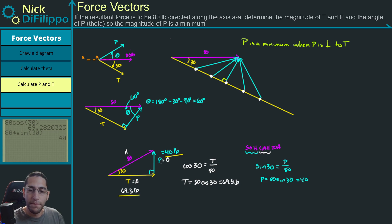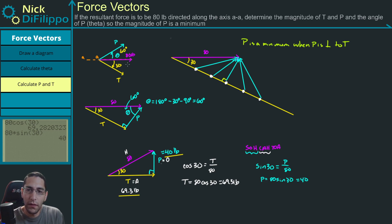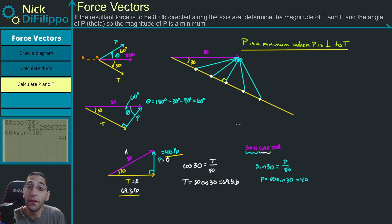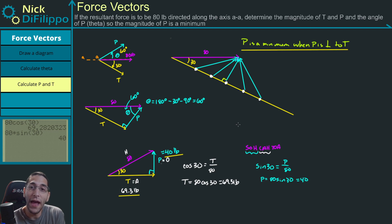P needs to be 60 degrees up from the resultant. What you need to remember when doing these minimum problems is this rule: you will have that minimum distance with two vectors when they are perpendicular to each other. If they're perpendicular, they will have a minimum distance between the resultant and the forces you're looking for.